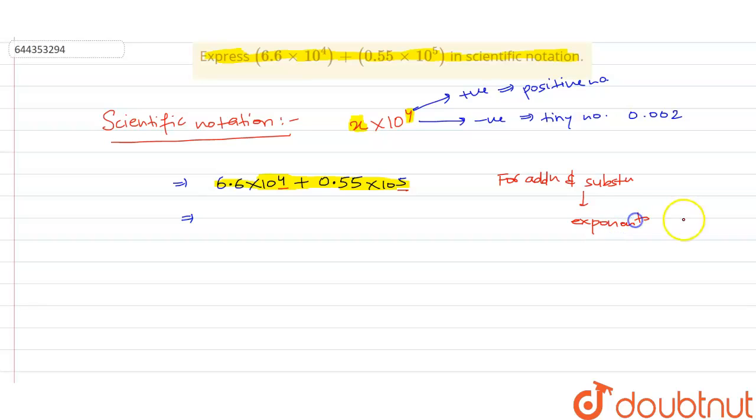This is important, so we have to make it same. So it will be 6.6 multiplied by 10 to the power 4 plus 5.5 multiplied by 10 to the power 4. Now making 10 to the power 4 as a common factor.